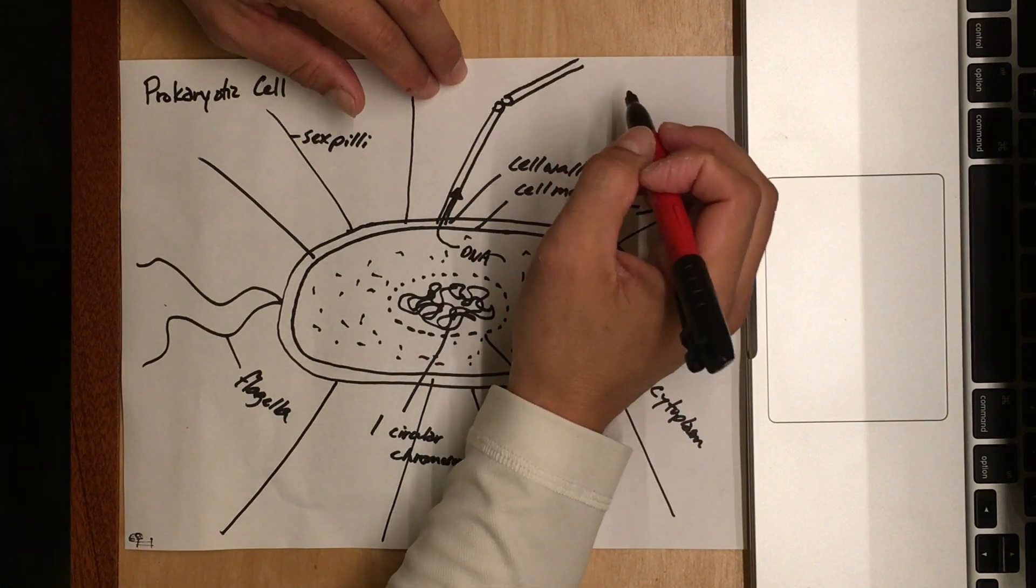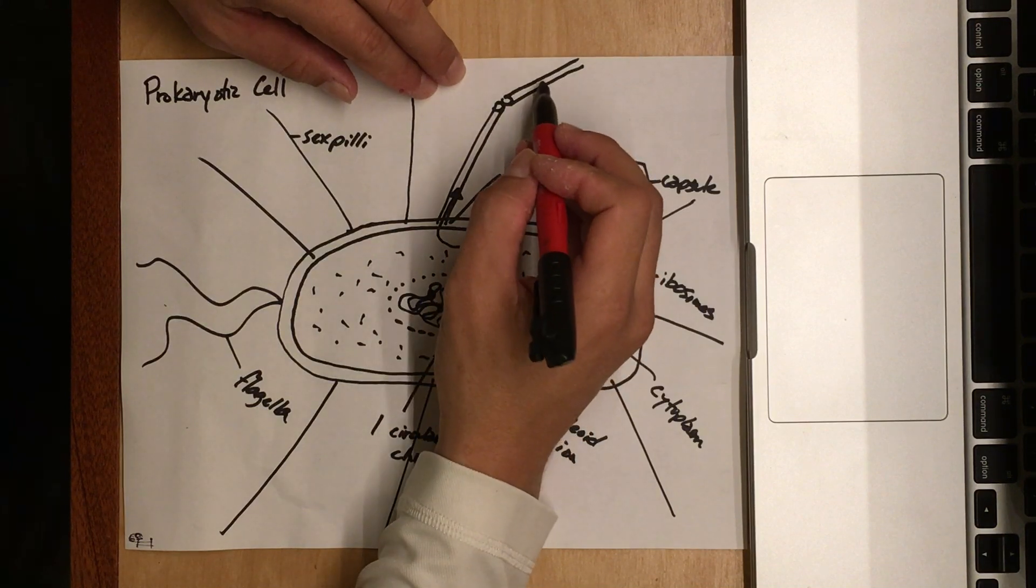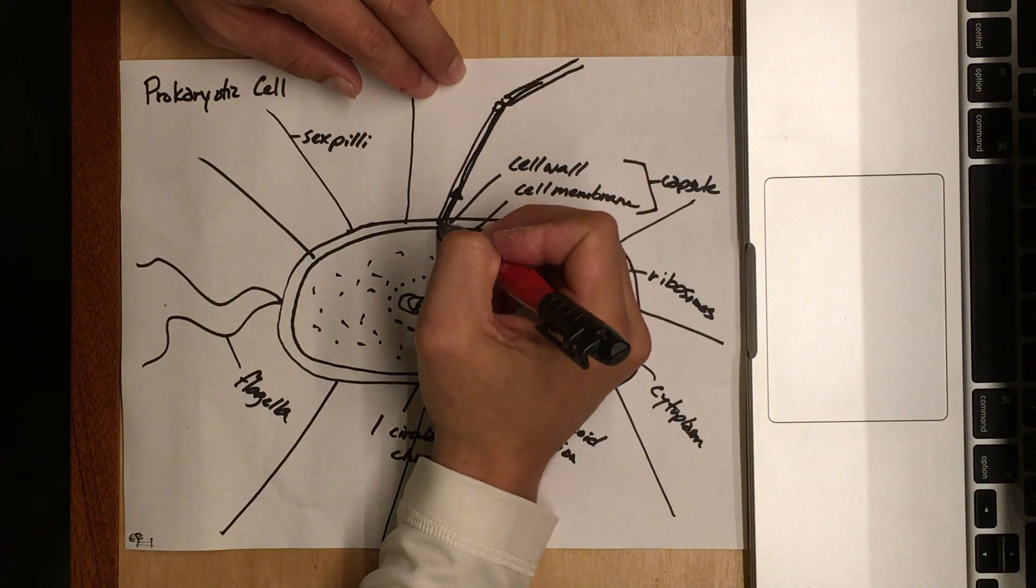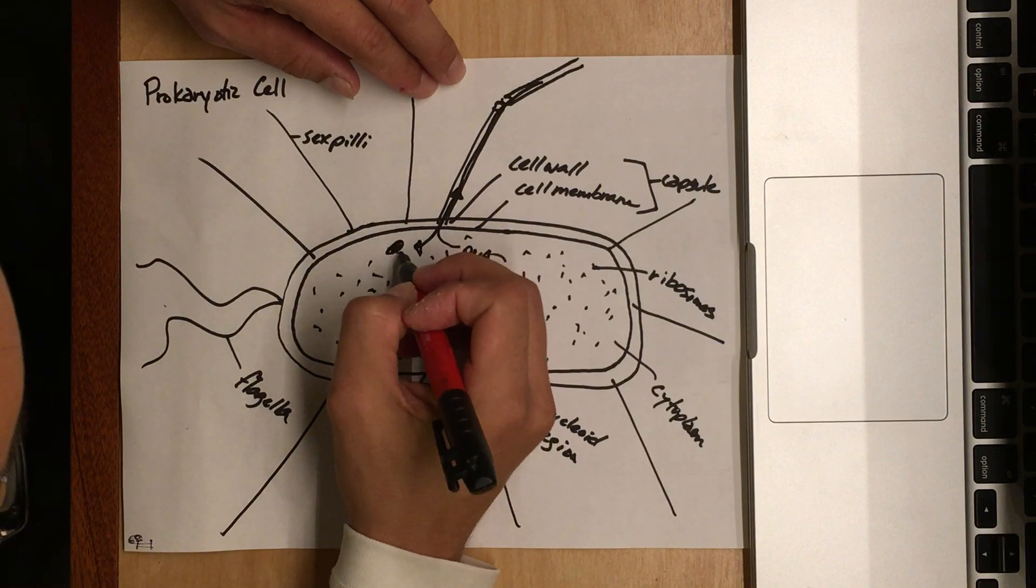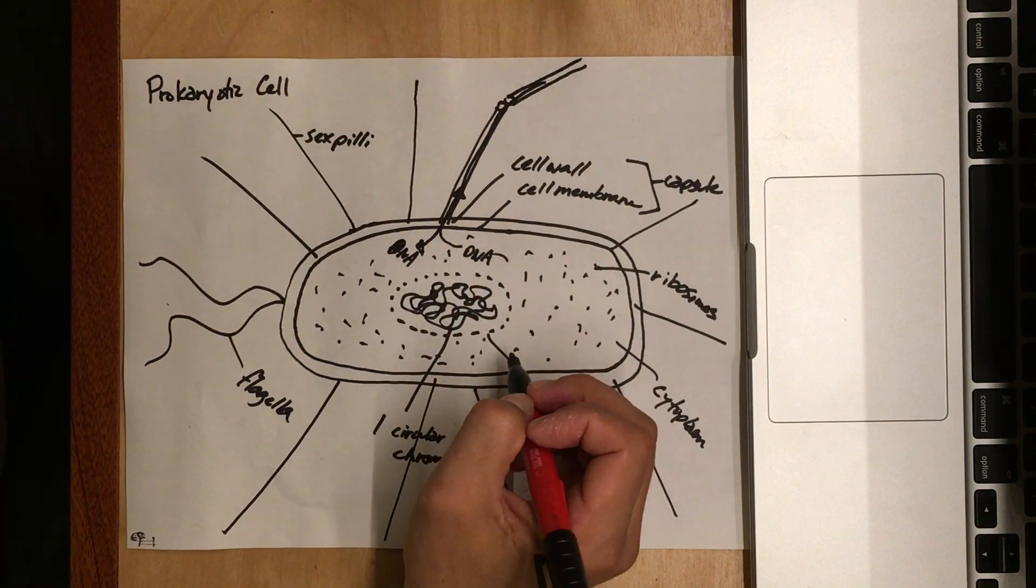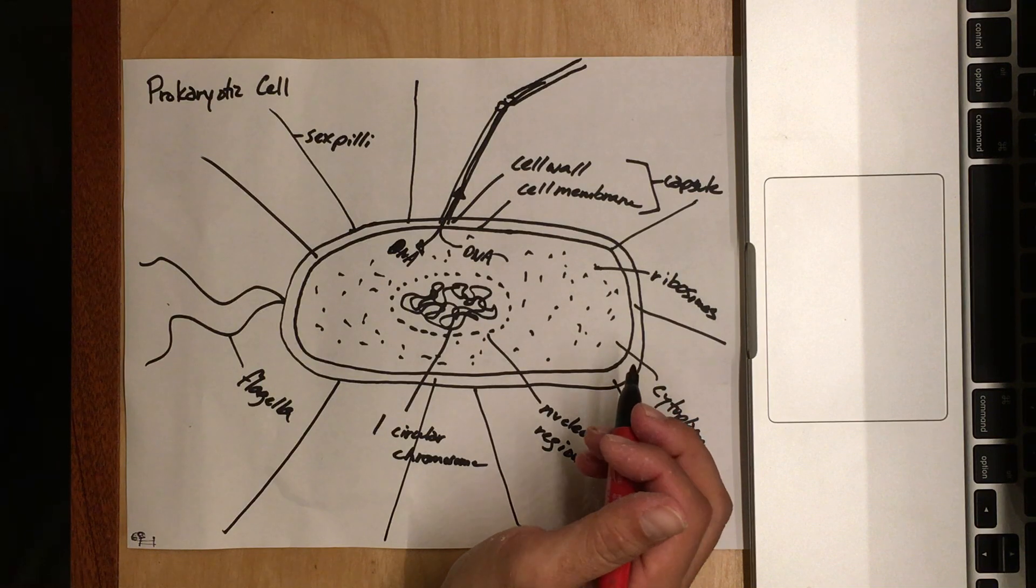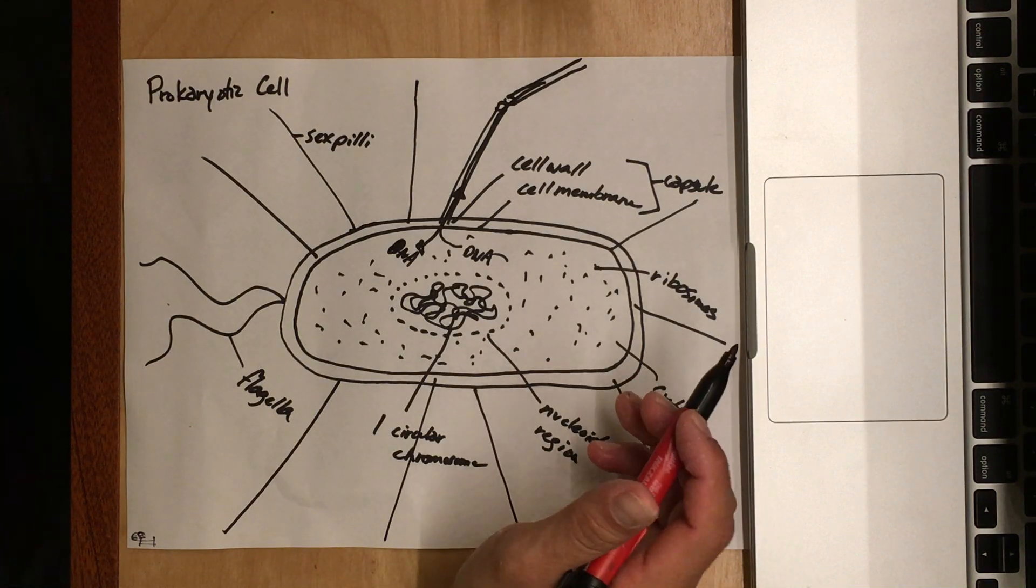Then DNA is going to come from that bacterial cell over here into the cytoplasm, and they're going to exchange DNA. If they're exchanging DNA, exchanging genetic information, that's sex. So they're going to be able to have sex that way.